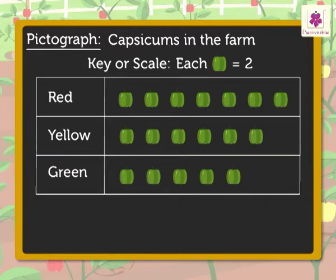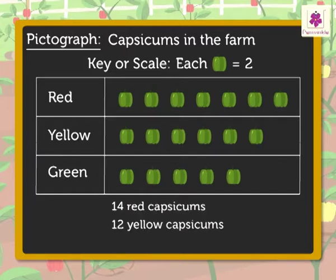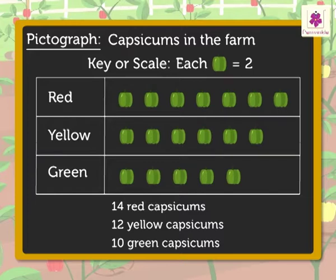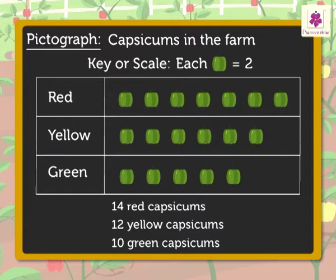Hence, from the PICTOGRAPH we can say, there are fourteen red capsicums, twelve yellow capsicums, and ten green capsicums on the farm. From the information obtained from the PICTOGRAPH, we can say how many capsicums there are in all, whether red capsicums are more or yellow, and so on.